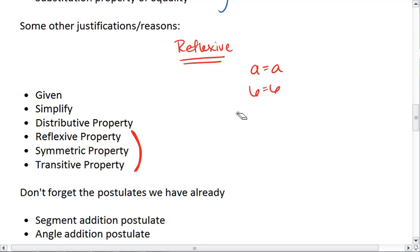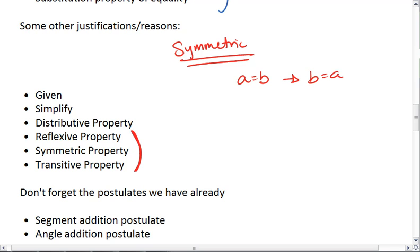The symmetric property. For this one, you should think about symmetry. What this tells me is that if a equals b, then b equals a. If x equals 3, then 3 equals x.